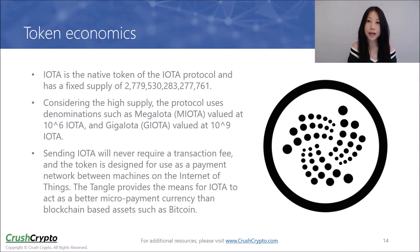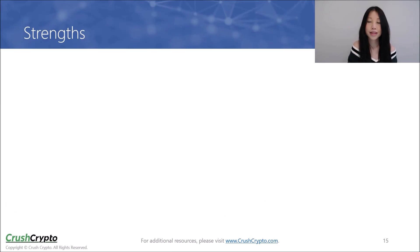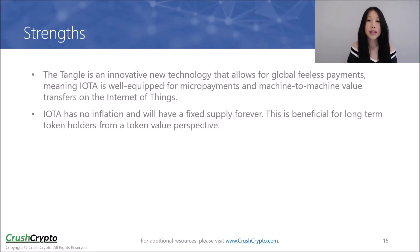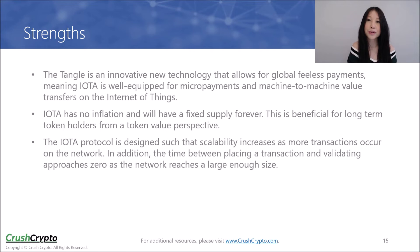The Tangle provides the means for IOTA to act as a better micropayment currency than blockchain-based assets such as Bitcoin. Here are some of our thoughts on the project's strengths. The Tangle is an innovative new technology that allows for global, fee-less payments, making IOTA well-equipped for micropayments and machine-to-machine value transfers on the Internet of Things. IOTA has no inflation and will have a fixed supply forever, which is beneficial for long-term token holders from a token value perspective. The IOTA protocol is designed such that scalability increases as more transactions occur on the network, and the time between placing a transaction and validating approaches zero as the network reaches a large enough size.